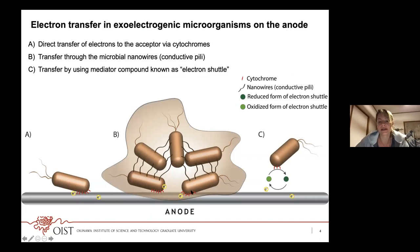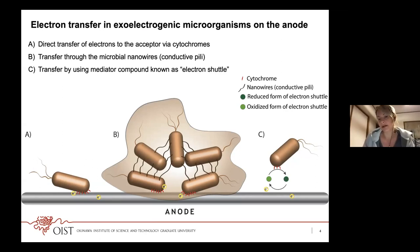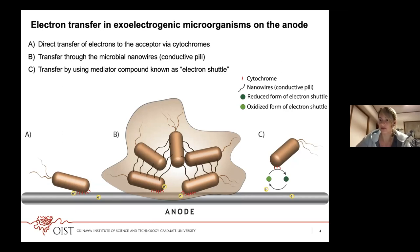Only bacteria closely attached to the electrode have cytochrome or direct contact. The third type of transfer uses mediators or chemical compounds known as electron shuttles. In this case, bacteria don't need direct contact with the electrode; they use chemicals available in the medium or wastewater, give electrons to these compounds, and the compounds transfer the electrons to the electrode surface.